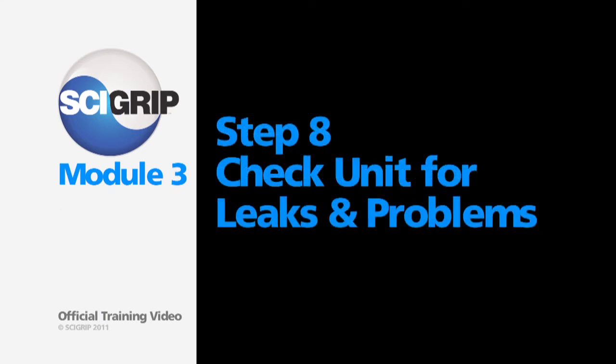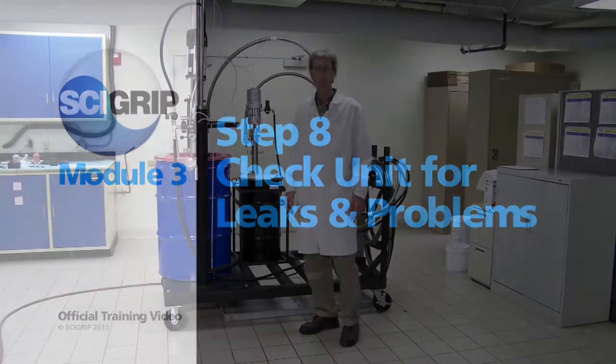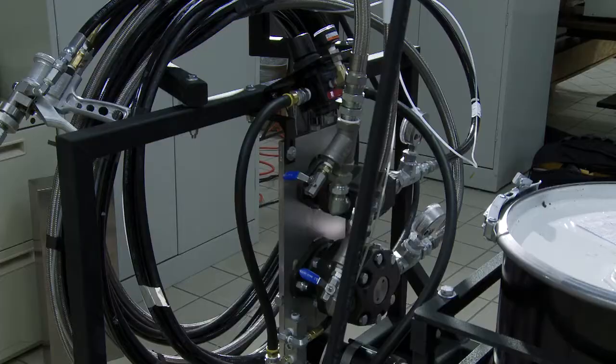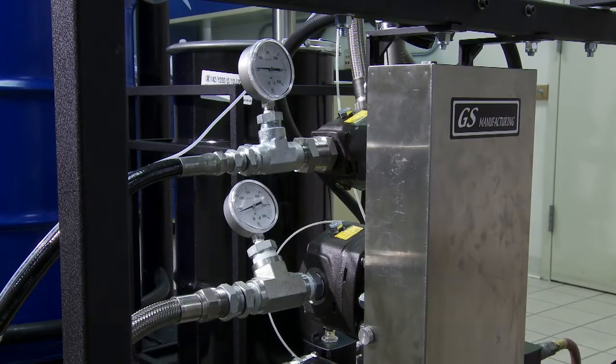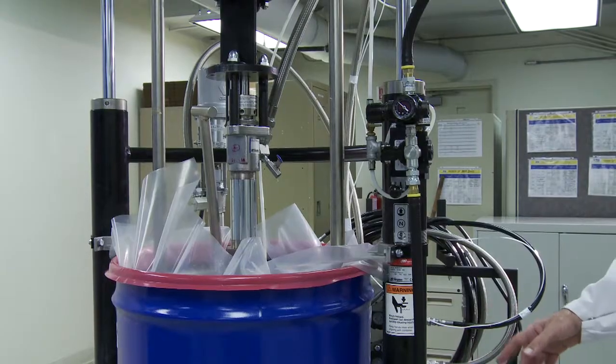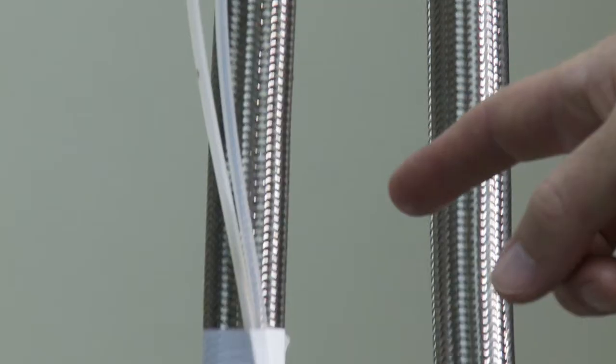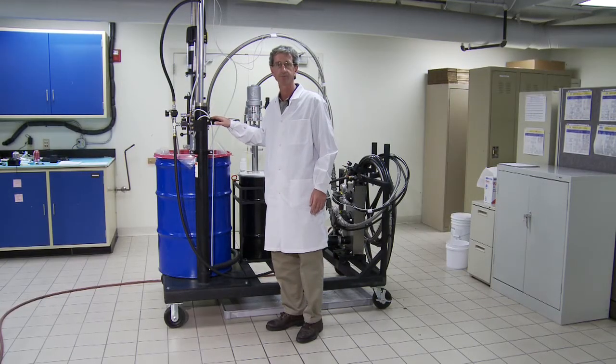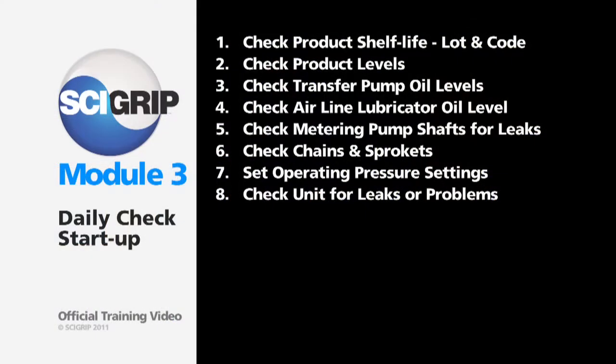Step eight, check entire unit for leaks and other problems. Check the unit from one end to the other looking at all the hoses, lines and pumps, looking for any kind of air or material adhesive or activator leaks or kinks in hoses or any other mechanical problems, and correct those before operating the equipment.